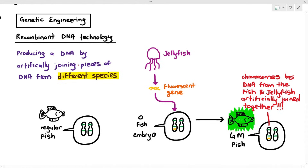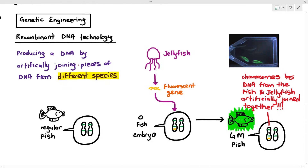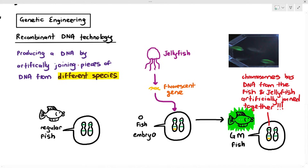Some students ask: why do we genetically modify the fish to make it glow? Sometimes it's just for curiosity — we want to see if we introduce genes into other organisms, would they be able to express those foreign genes and get new characteristics? Glowfish do exist. They don't glow with the force of a spotlight — you cannot use the fish as a torchlight. But under specific conditions, in the dark with a little UV light, it produces a soft glow, emitting light.